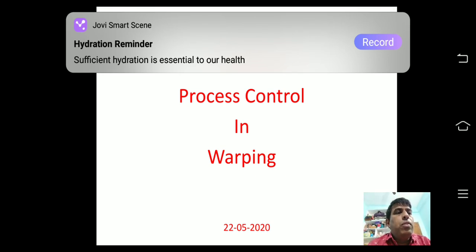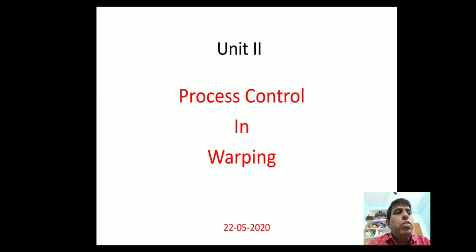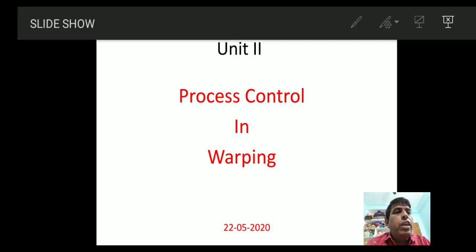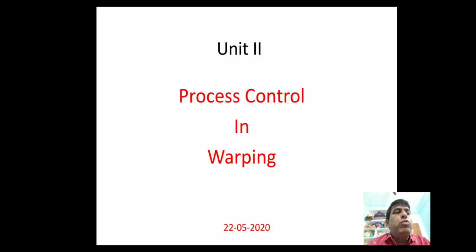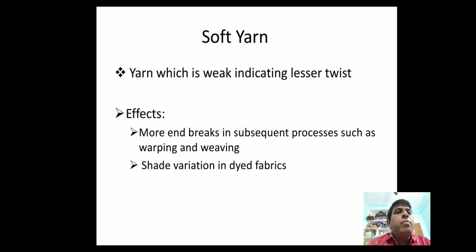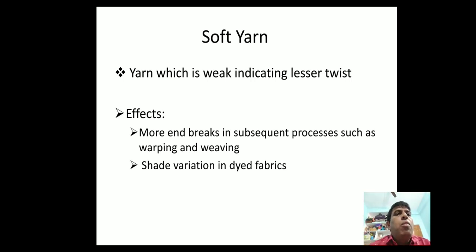Continuing the topic of end breaks in process control and warping. The next defect is soft yarn — yarn which is weak, indicating lesser twist. This is one of the defects causing more end breaks in subsequent processes such as warping and weaving.